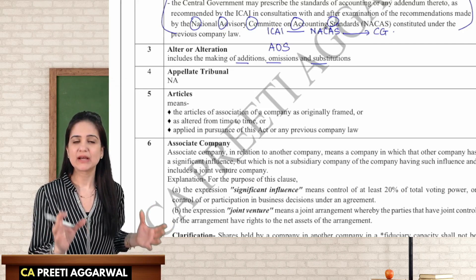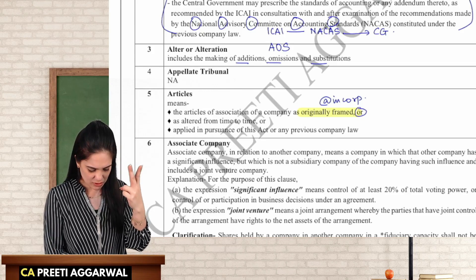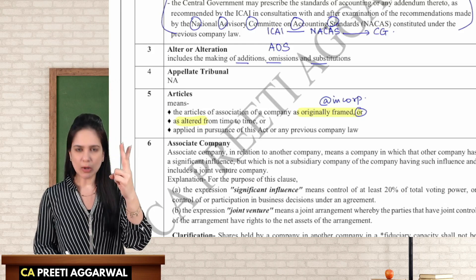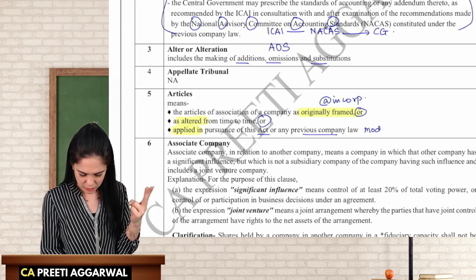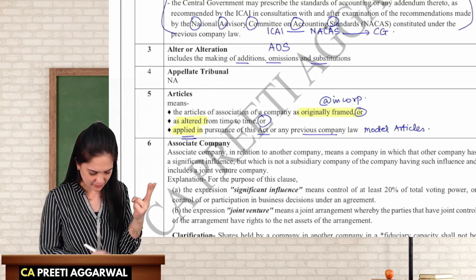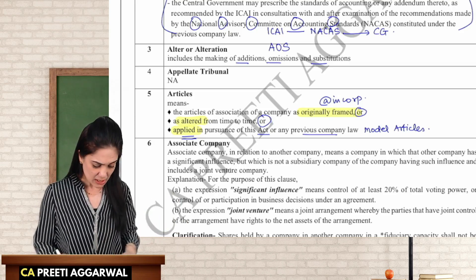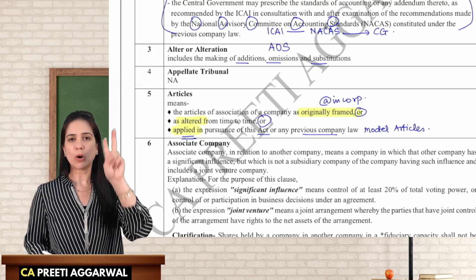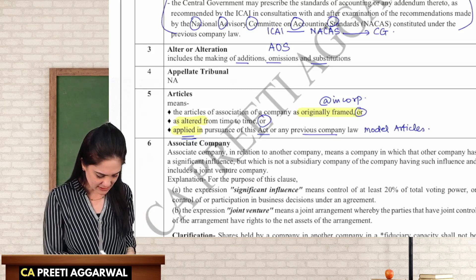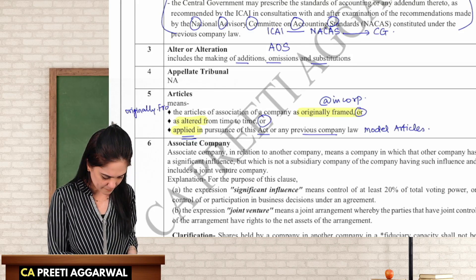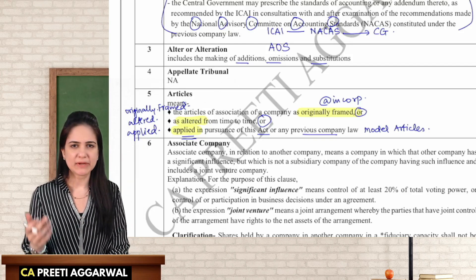Clause 5 defines articles. Articles means the articles of the company which were originally framed at the time of incorporation, or altered from time to time, or applied in pursuance of this act or any previous company law. This also includes the model articles. If your articles are silent, we automatically apply the model articles given in Schedule 1. So the three keywords are: originally framed, altered from time to time, or applied in pursuance of either this act or any previous company law.